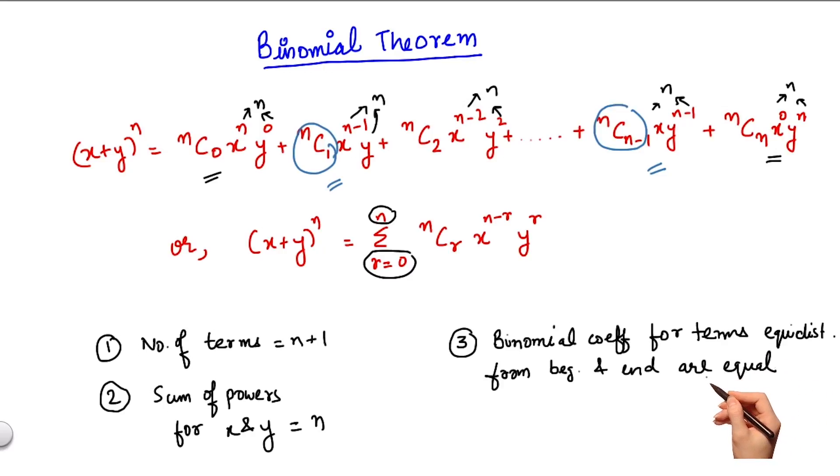One important thing we need to highlight here is that since we would be using nCr again and again in this chapter, we use a simpler form sometimes to represent nCr and it is represented as Cr. So whenever you encounter Cr here it would automatically imply nCr.